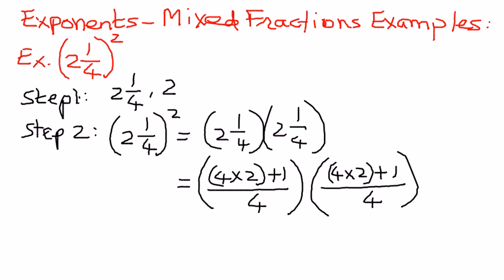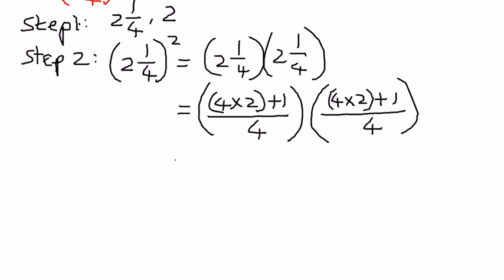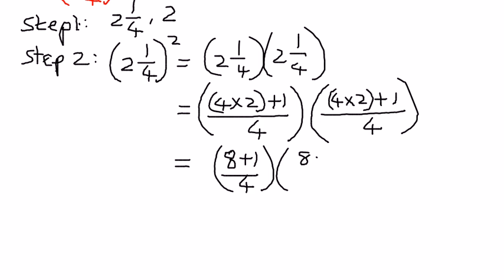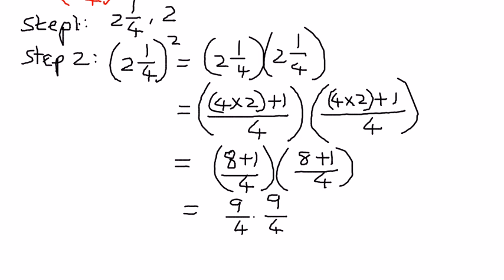So we simplify the math here. We take 4 times 2, which is 8, and then add 1 to that, and then divide it by 4. The second one is very similar: 4 times 2 is 8, plus 1, divided by 4. Now we simplify the numerator: 8 plus 1 is 9, divided by 4. The second part is also 9 divided by 4. Therefore, 9 times 9 is 81, divided by 4 times 4, which is 16.